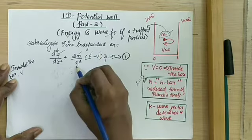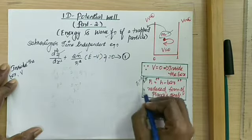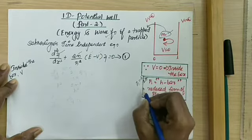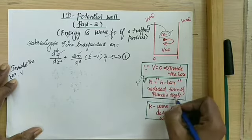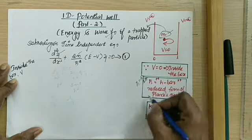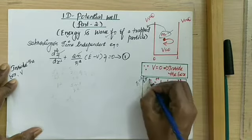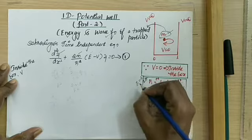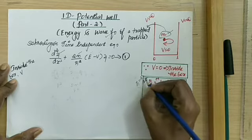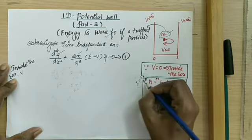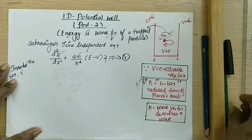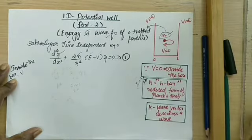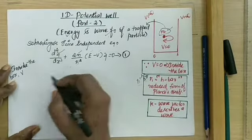The h-cross is a new term. It is nothing but a reduced form of Planck's constant, also called h-bar. When you expand it, h-cross is equal to h by 2 pi, where h is Planck's constant and 2 pi relates to the angular component of the particle.